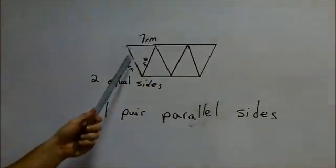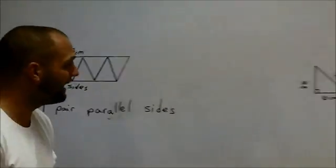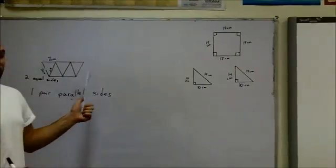These are actually isosceles triangles because they have two equal sides. So we have one, two, three, four, five isosceles triangles. Pretty cool.